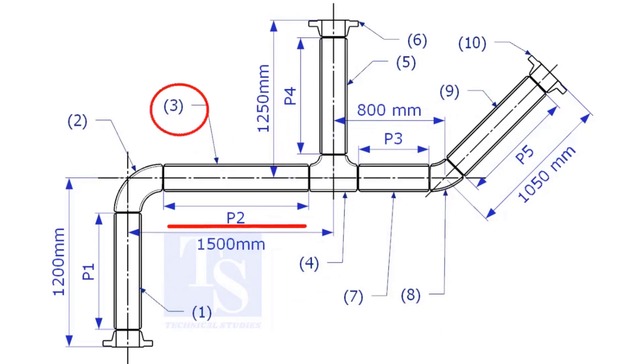Let us calculate the length of item number 3. We already know the takeoff length of the 6 inch long radius elbow. Now, check the chart for the takeoff length of the equal T.